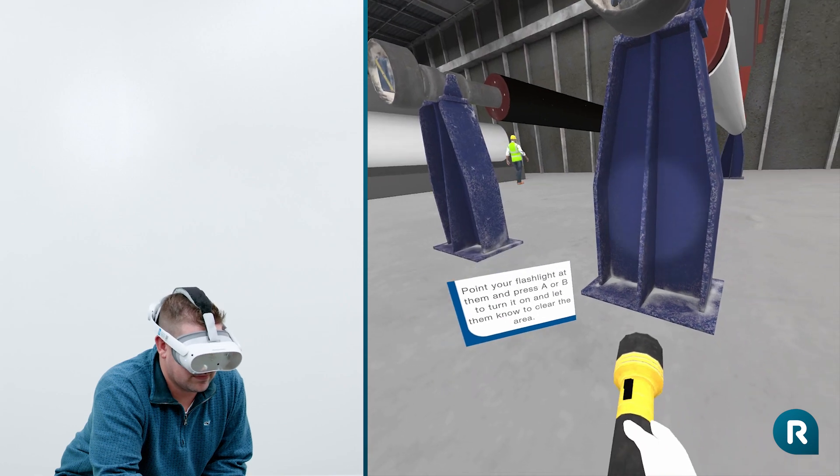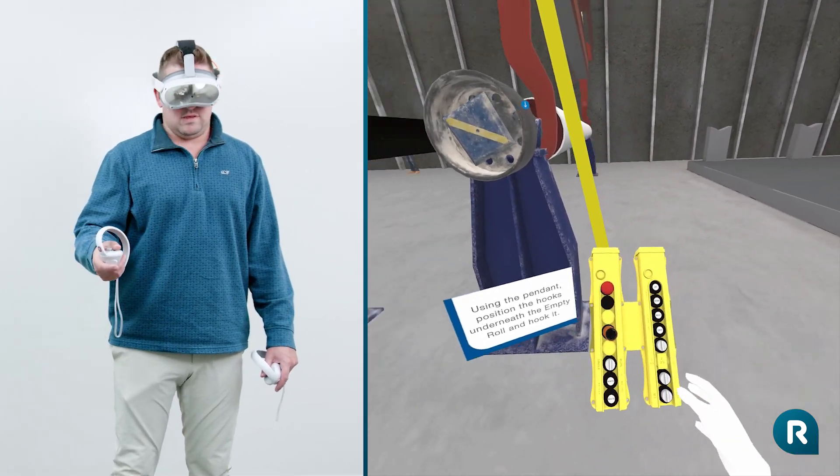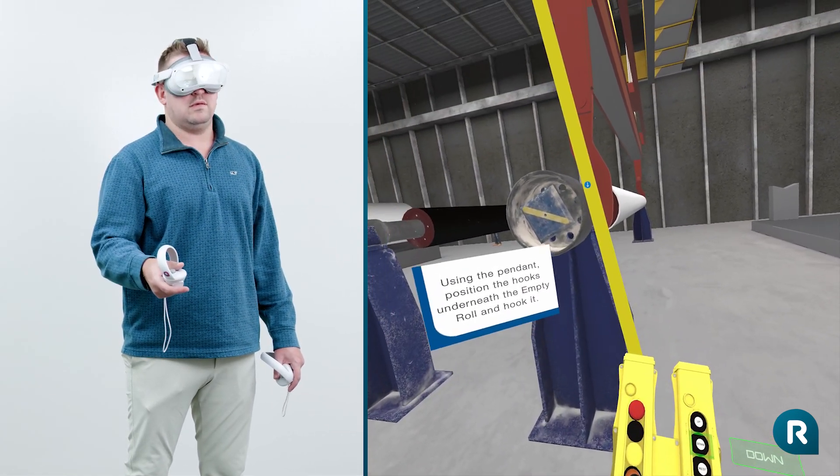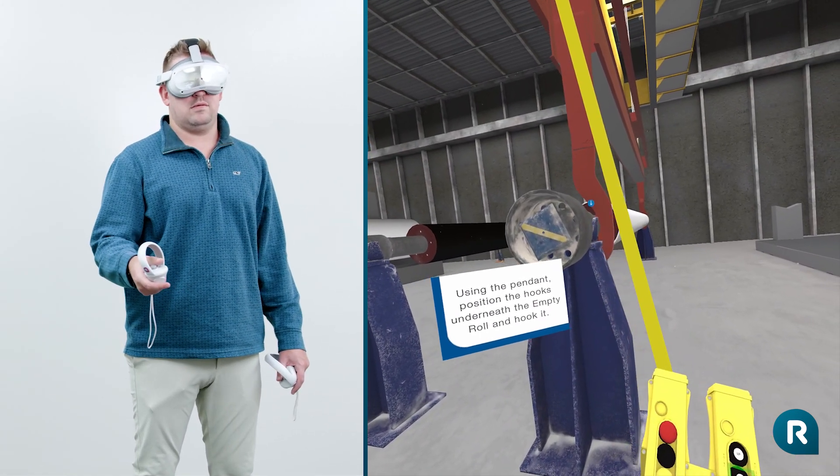It looks like the travel space is clear now. Next, we want to move an empty roll to the paper machine. Using the pendant, move the crane and position the hooks underneath the empty roll.